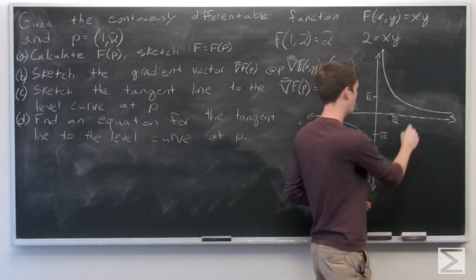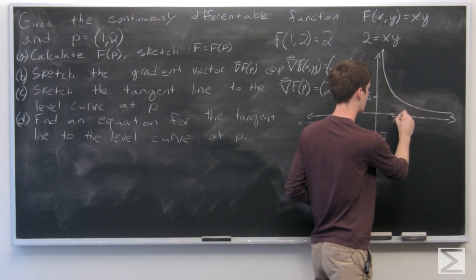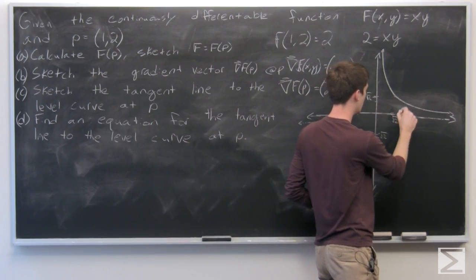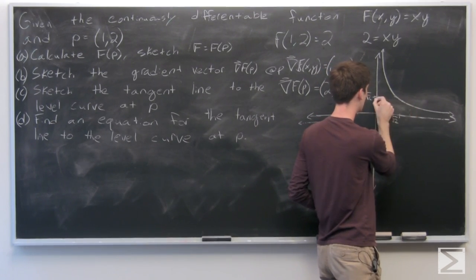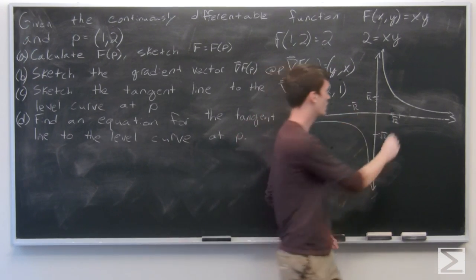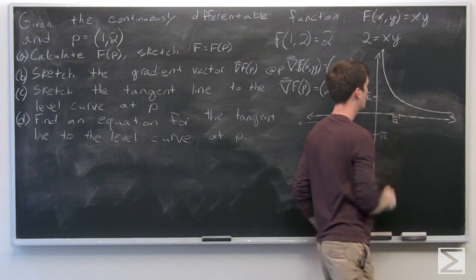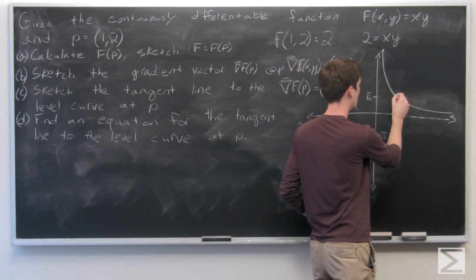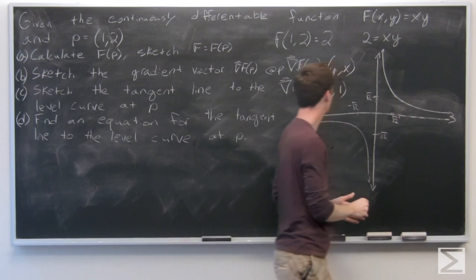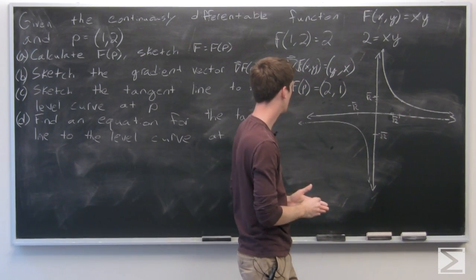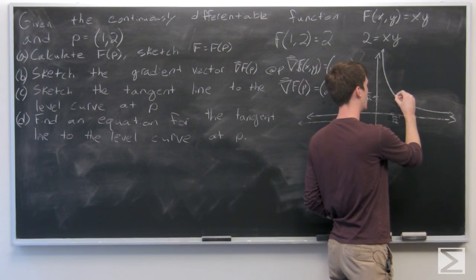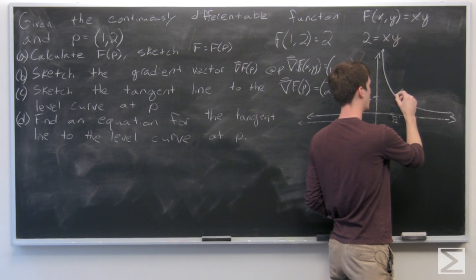2, 1. So we have somewhere like around there is 2, and somewhere around there is 1. So we want to be going from here, over 2 and up 1. So something like that.